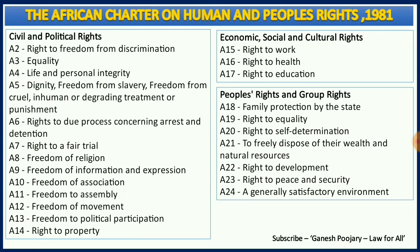The African Charter has given several rights to the people of Africa, listed under three main headings: civil and political rights; economic, social and cultural rights; and people's rights and group rights. The civil and political rights include: freedom from discrimination, equality, right to life and personal integrity, dignity, freedom from slavery, freedom from cruel inhuman or degrading treatment or punishment, rights to due process concerning arrest and detention, right to a fair trial, freedom of religion, freedom of information and expression, freedom of association, freedom of assembly, freedom of movement, freedom to political participation, and right to property.